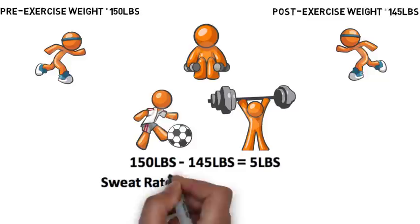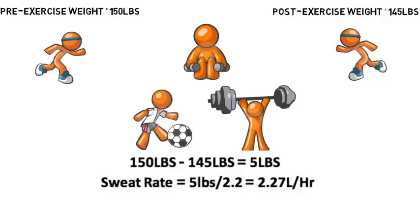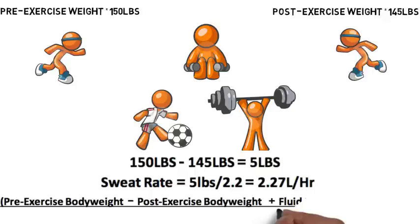To calculate the athlete's sweat rate, we take the weight that was lost and divide by 2.2 to calculate their sweat rate. Since our athlete exercised for an hour and with his 2.27 liters an hour sweat rate, he would need to consume 2.27 liters.